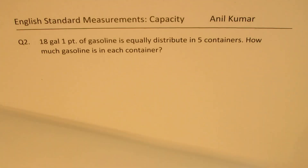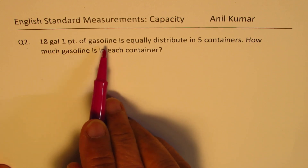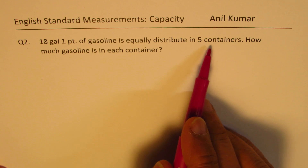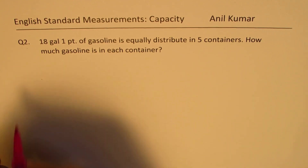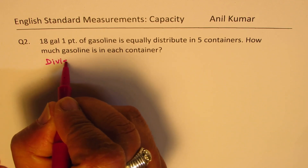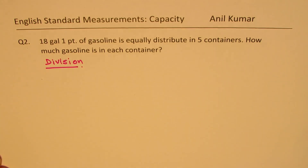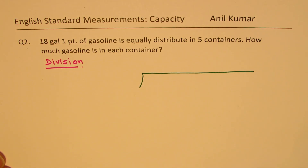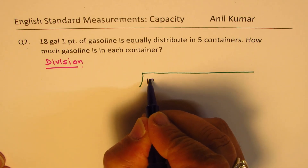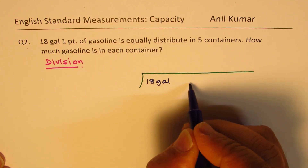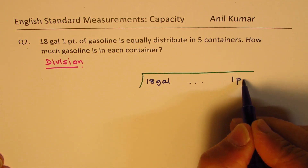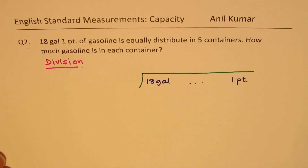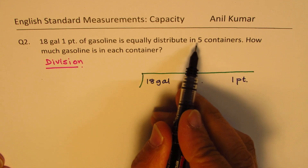Now let's look into the second question. Eight gallons one pint of gasoline is equally distributed in five containers — how much gasoline is in each container? So we need to divide. What we have here is 18 gallons and one pint, so we'll leave some space for quart and write down one pint. We need to divide this by five since there are five containers.